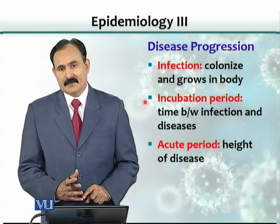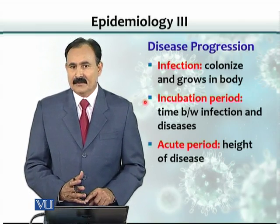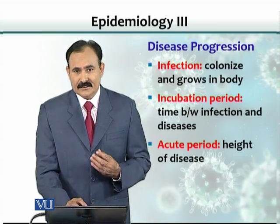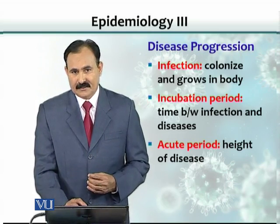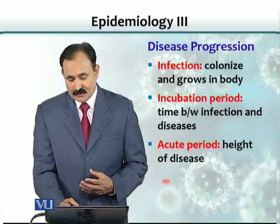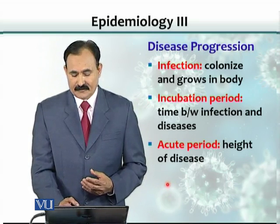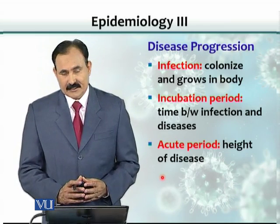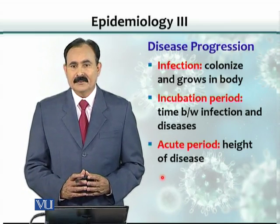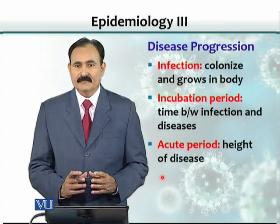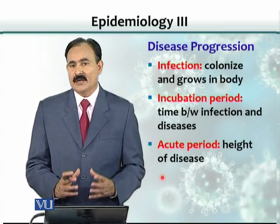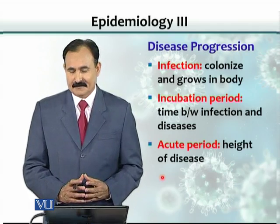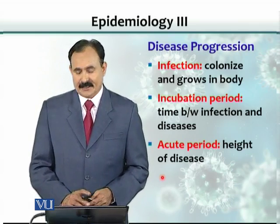Once the disease starts showing up, it can show up as acute — the acute period where the disease manifests in a very heightened way, meaning the person gets really, really sick. That is called the acute period.